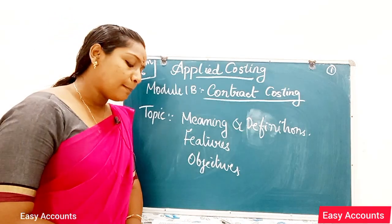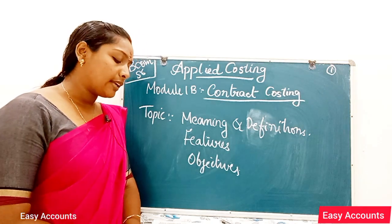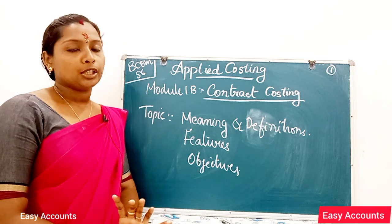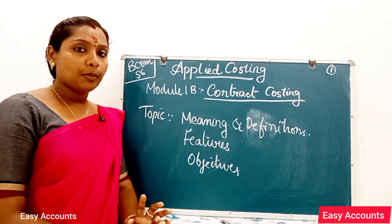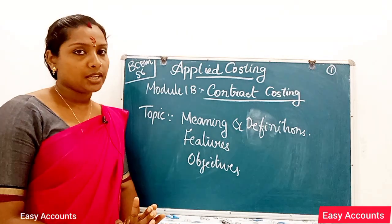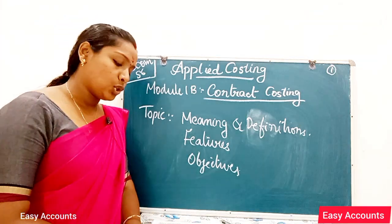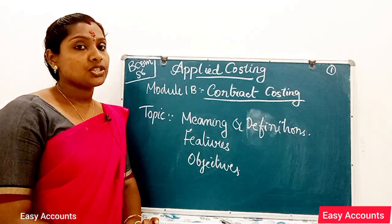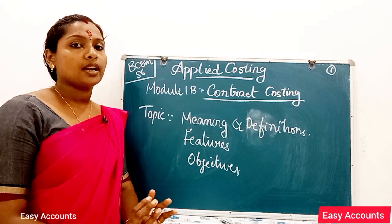Contract Costing is the method of costing applied by those concerns which are engaged in construction contracts. It is related to methods like job costing and batch costing. The concerns engaged in construction contracts use this method.